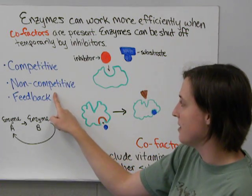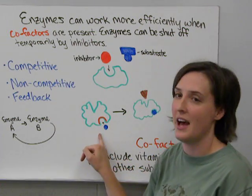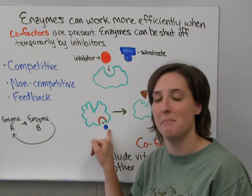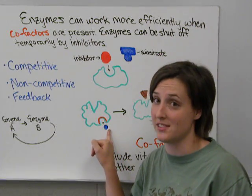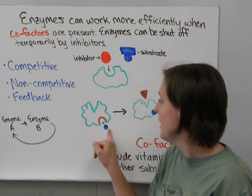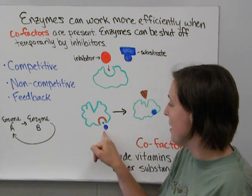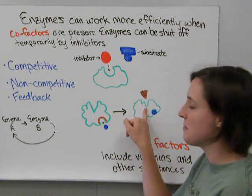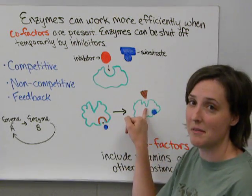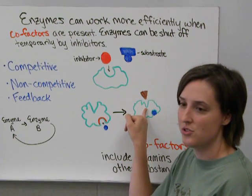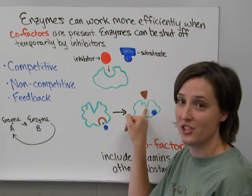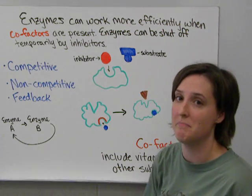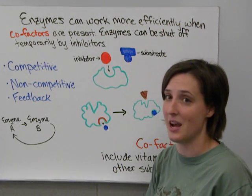Non-competitive inhibitors bind to a different site on the enzyme called the allosteric site. When this inhibitor binds to the allosteric site, it changes the shape of the active site, causing it to lose its attraction for the substrate so the substrate can no longer bind as efficiently.